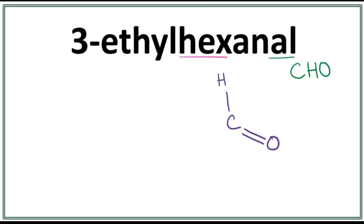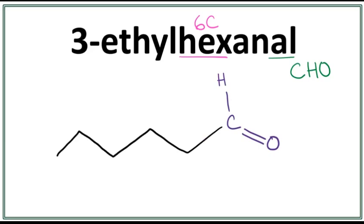The 'hex' here means that it has 6 carbons in the longest carbon chain. A trick to draw this is that you always count till 1 less than the number of carbons you want to draw. So 1, 2, 3, 4, 5.